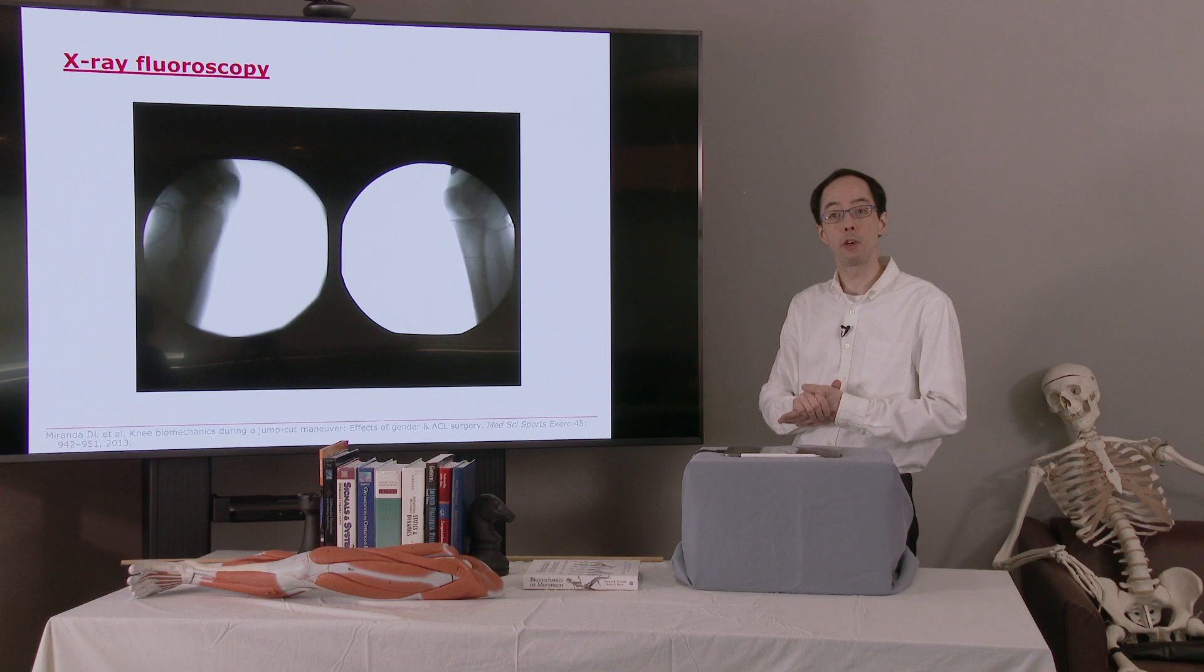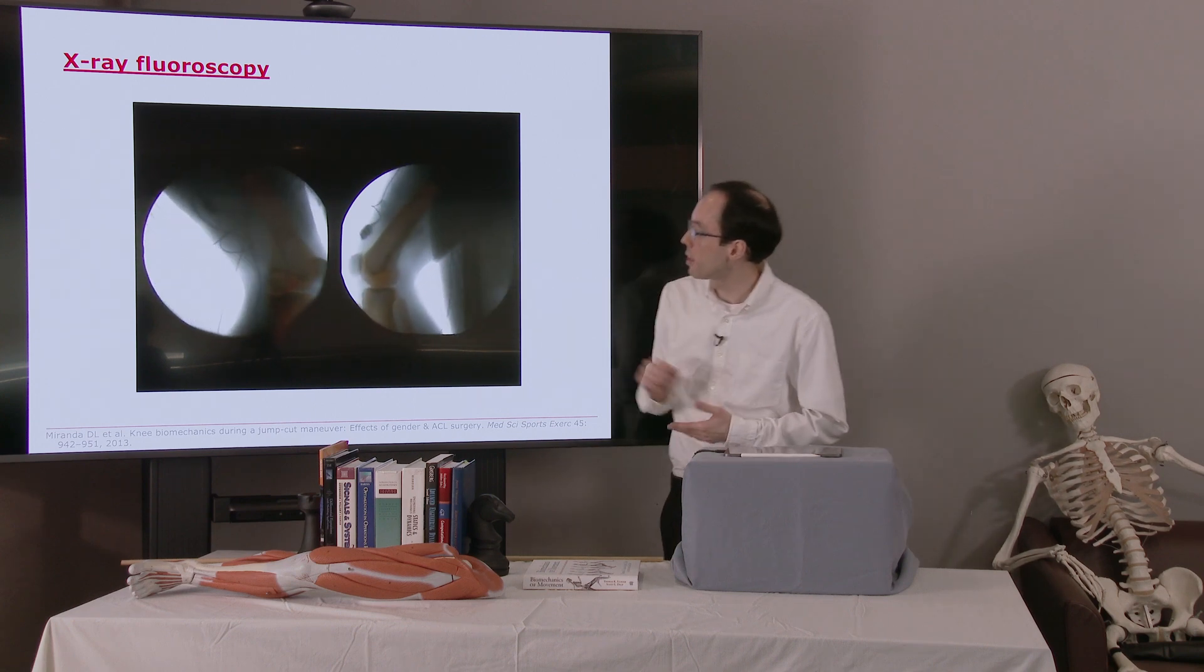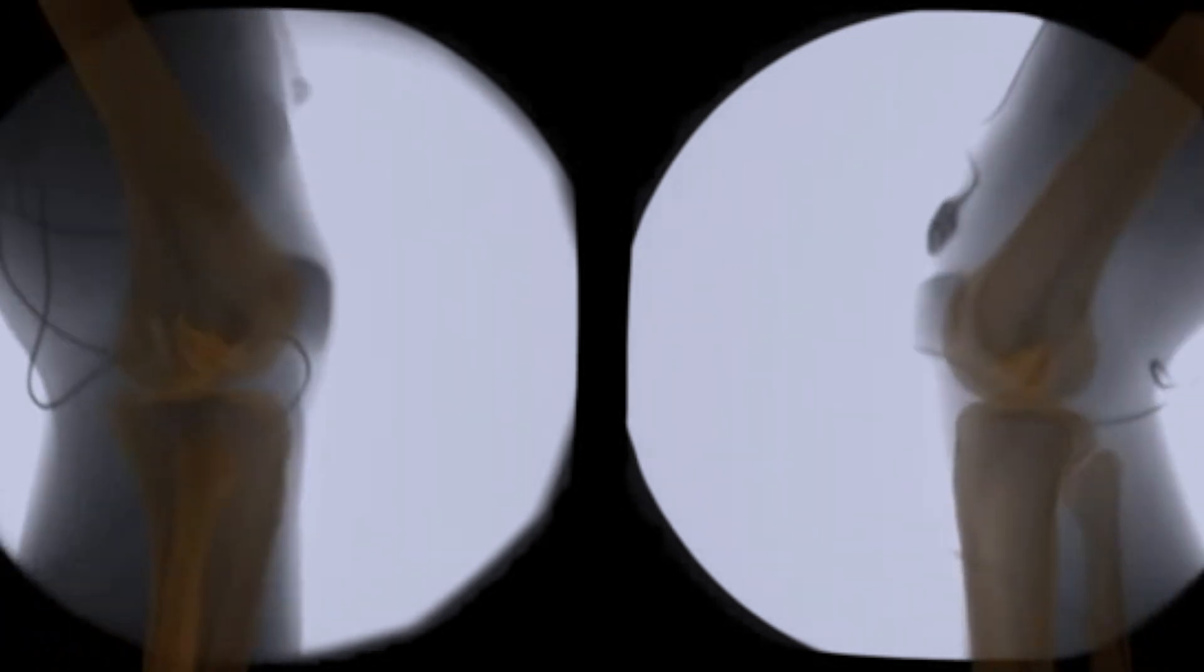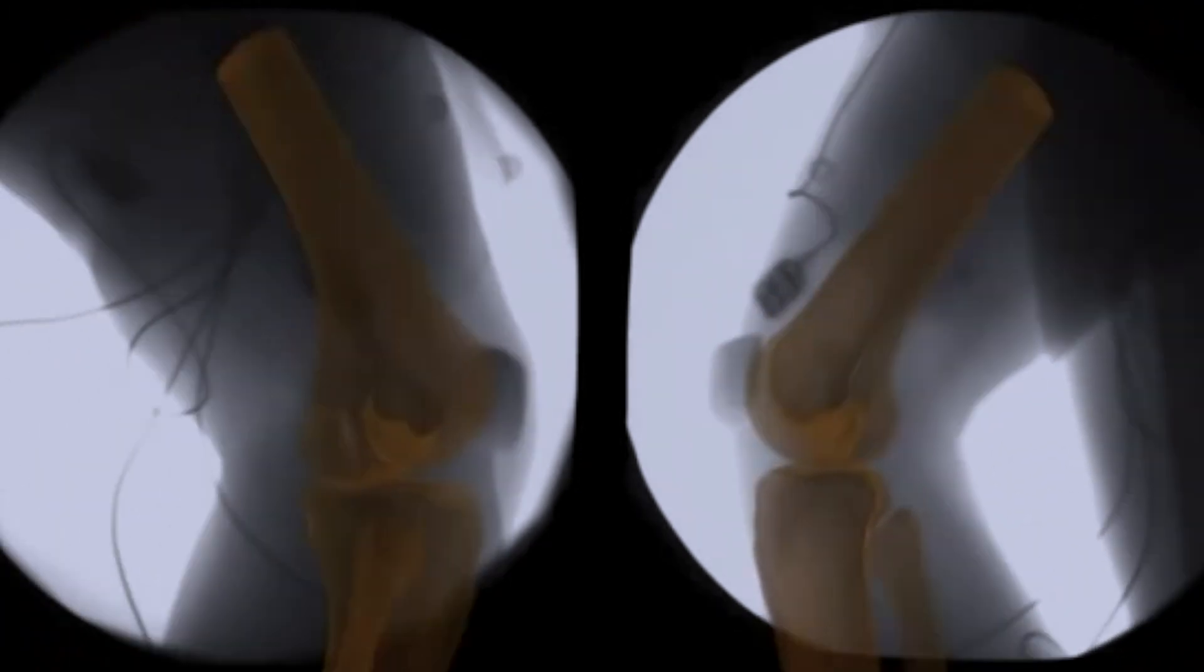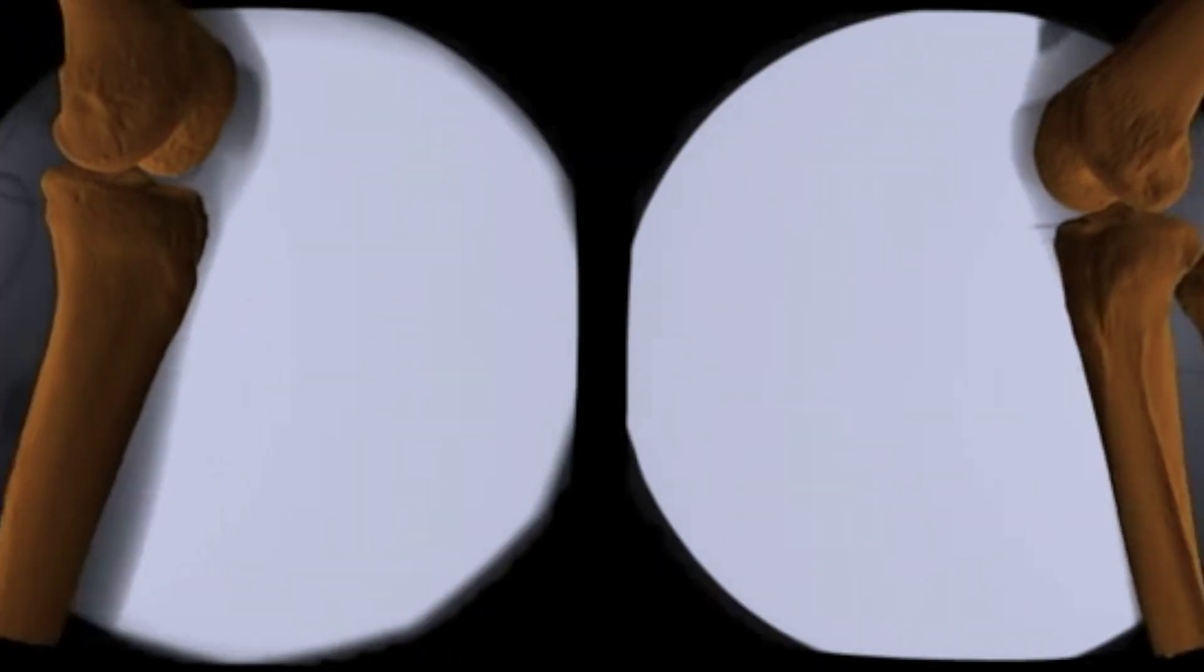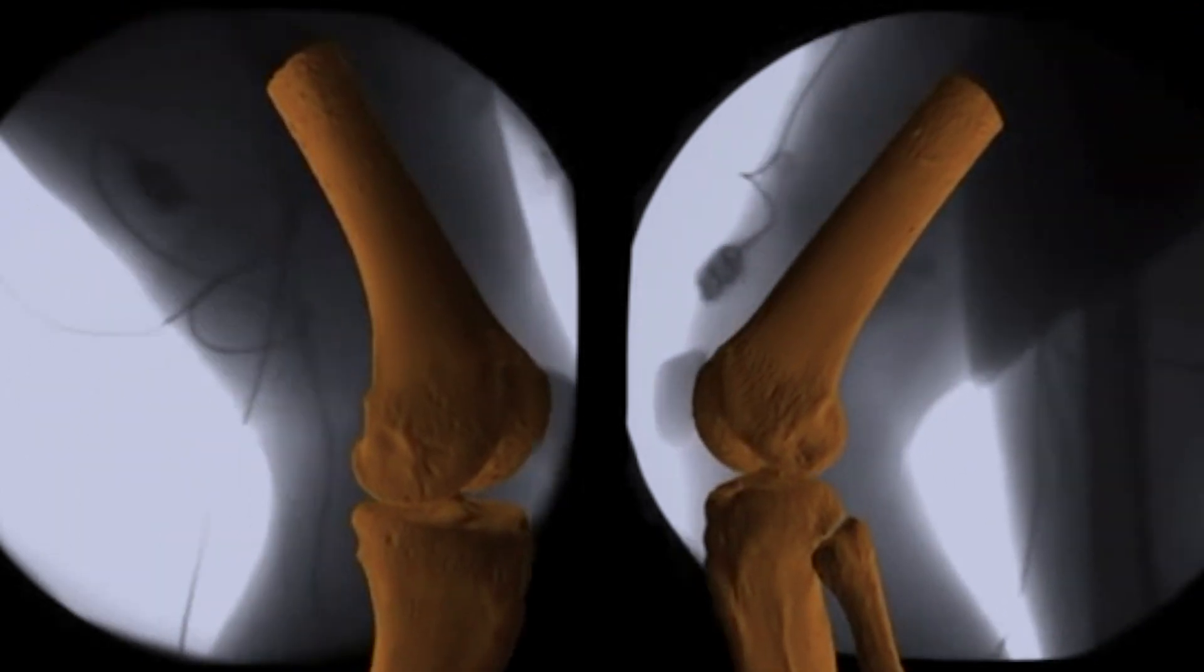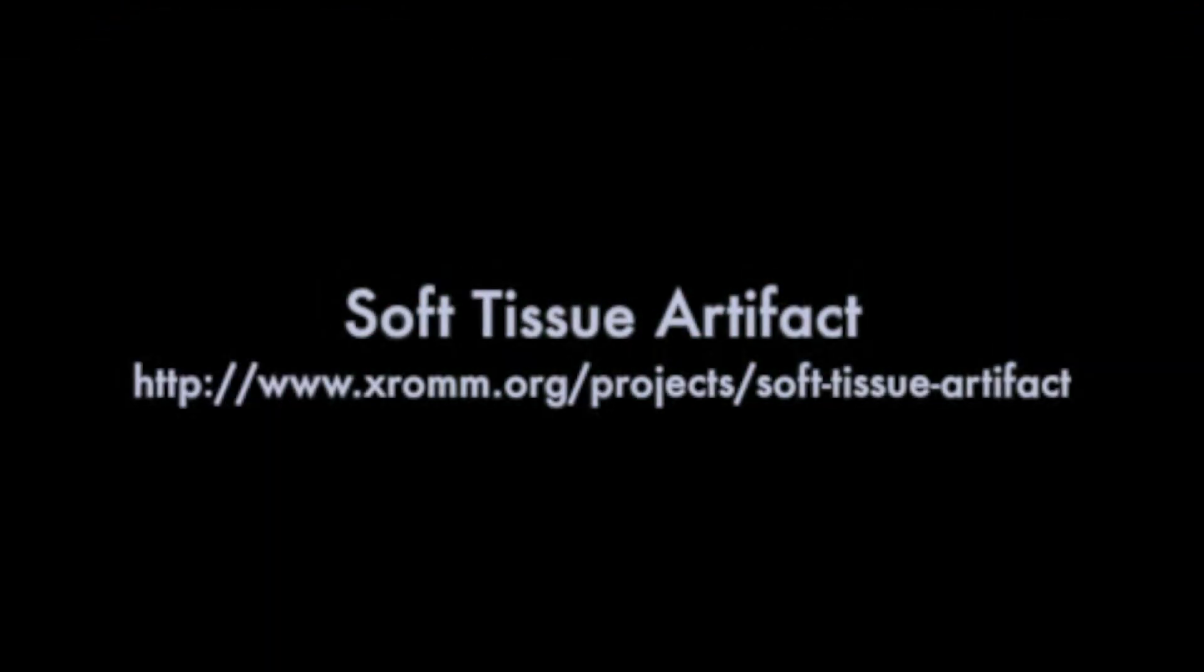And you'll notice a couple things in this video. We can track the bones directly. You'll also notice here's a marker on the skin. You can notice when the person lands, the marker moves around quite a bit. In fact, that's something we'll talk about a little bit later, but this is in fact quite a big issue in marker-based motion capture, the relative motion between the skin and the underlying bone, which is what we want to track.